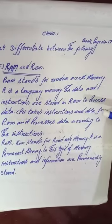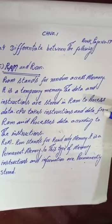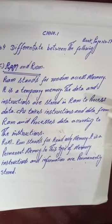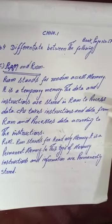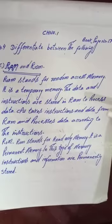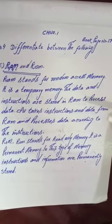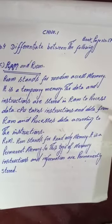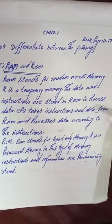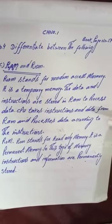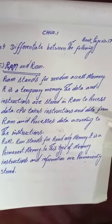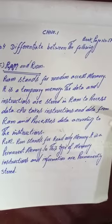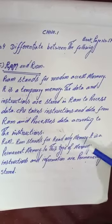RAM random access memory کا مخفف ہے۔ یہ ایک عارضی memory ہے۔ data کو process کرنے کے لیے data اور instructions RAM میں store کی جاتی ہیں۔ CPU data اور instruction RAM سے لیتا ہے اور instructions کے مطابق data کو process کرتا ہے۔